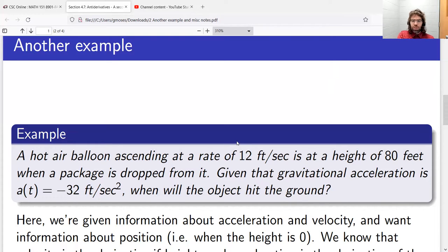So you're in the balloon, you've got this object, you're holding it out, you're about to drop it. This object is also going up at 12 feet per second. So at the moment that you release the object, its velocity is 12.